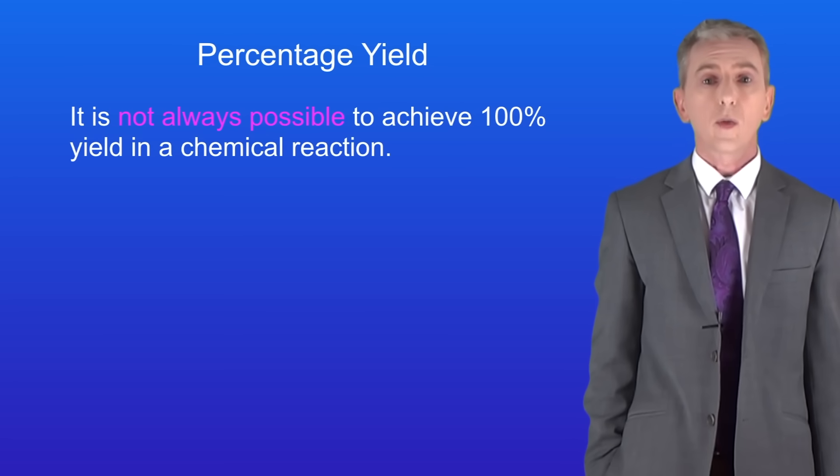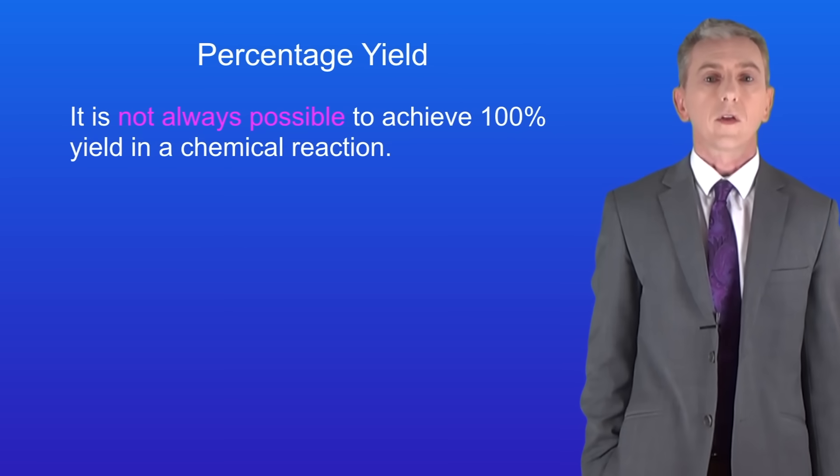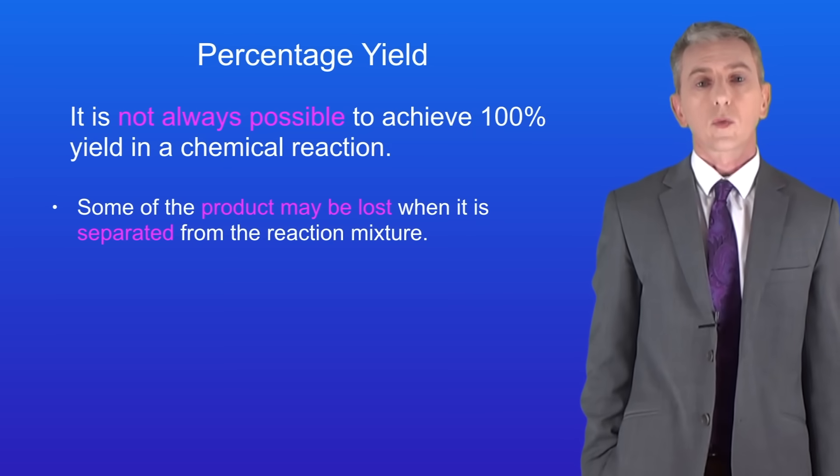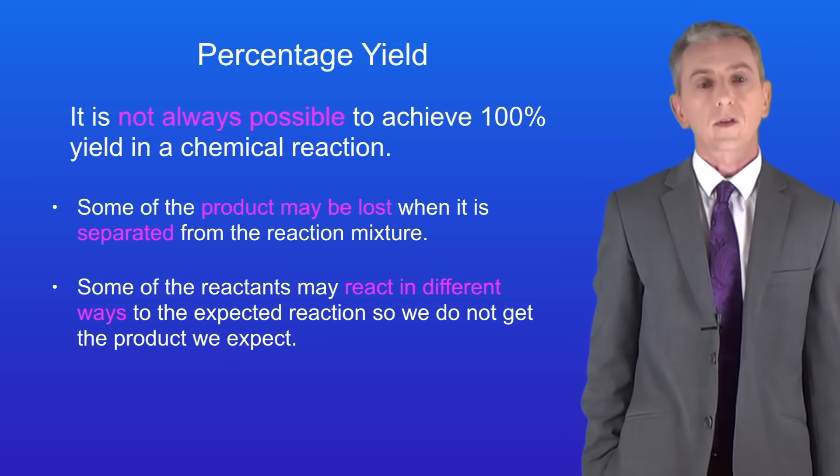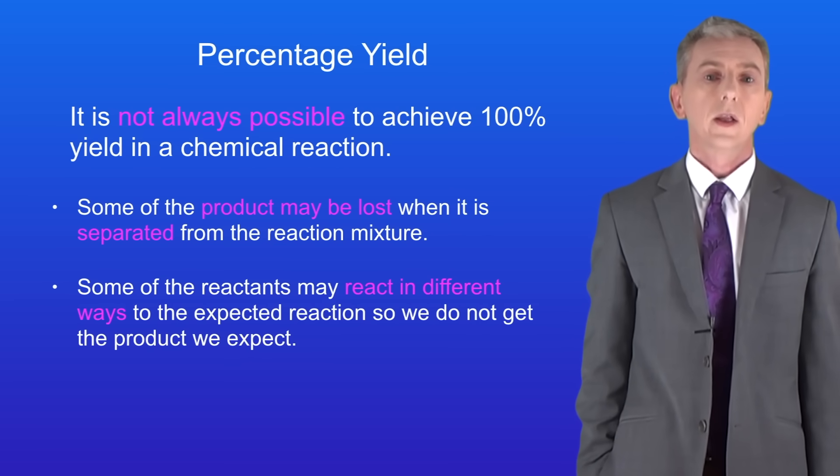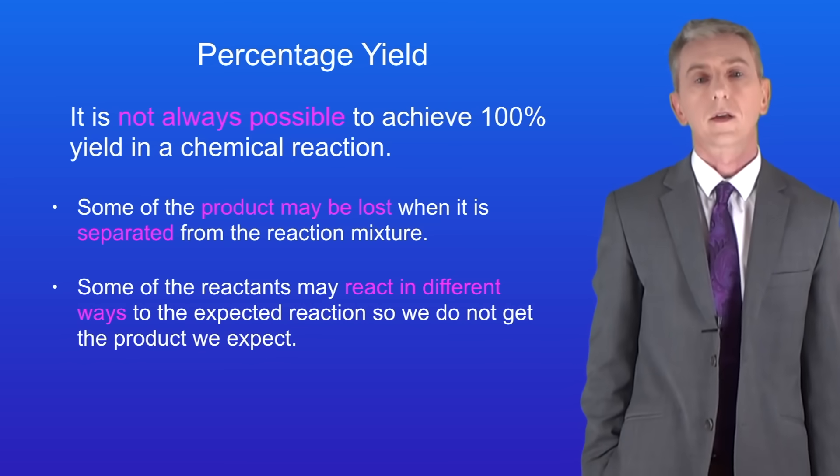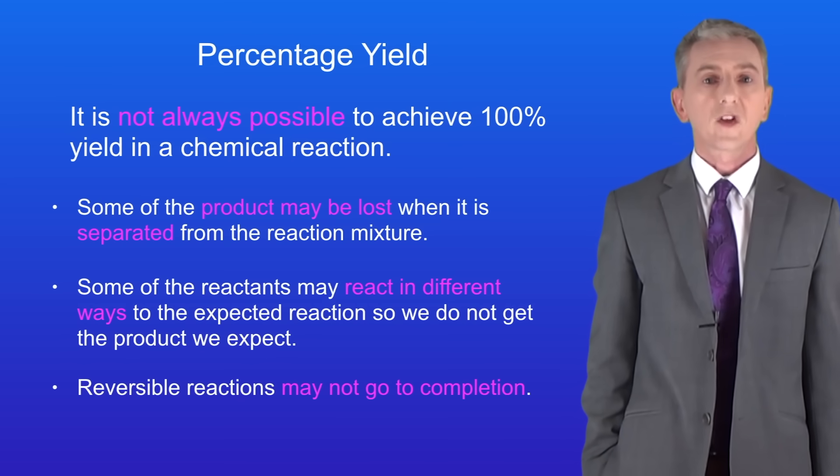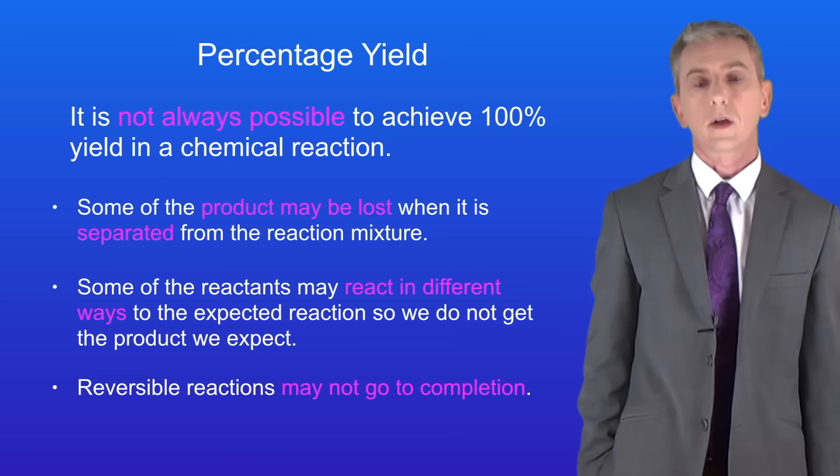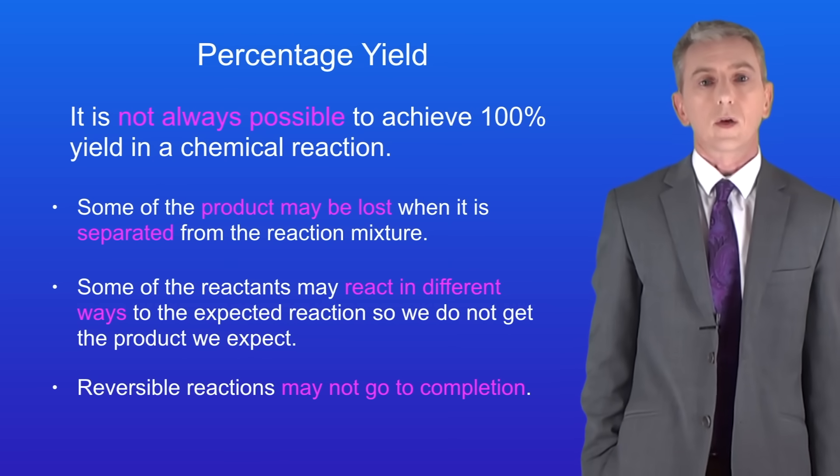In practice it's not always possible to achieve 100% yield in a reaction. There are three reasons for this and you need to learn them. Firstly, some of the product may be lost when it's separated from the reaction mixture. Secondly, some of the reactants may react in different ways to the expected reaction, so we don't get the product we expect. And finally, reversible reactions may not go to completion. We're going to look at reversible reactions in later videos.